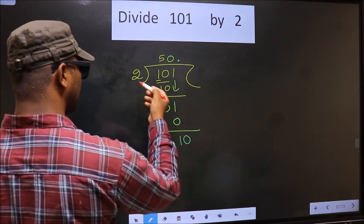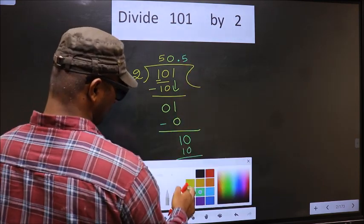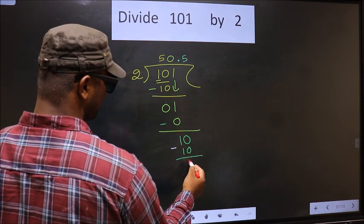Here we have 10. When do we get 10 in 2 table? 2, 5, 10. Now you subtract. 10 minus 10, 0.